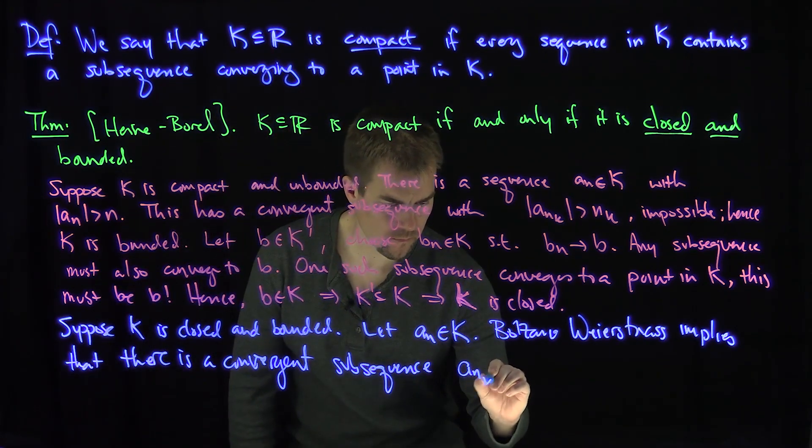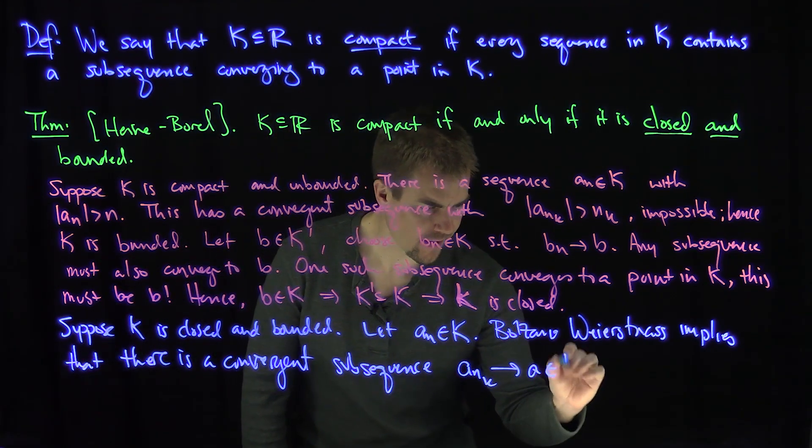Since a_n is in k and k is bounded, Bolzano-Weierstrass implies that there is a convergent subsequence. So a_n_k converges to a point a.